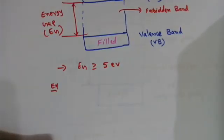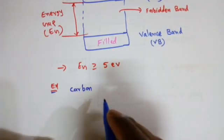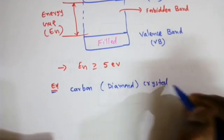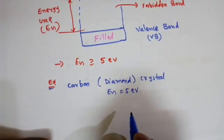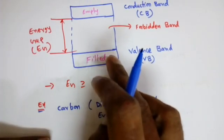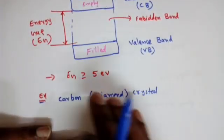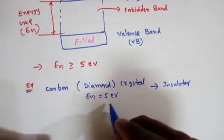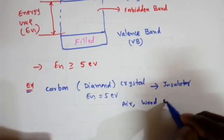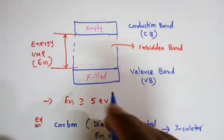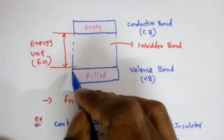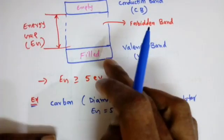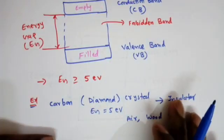For example, carbon in diamond crystal form — even though carbon is a fourth-group element — has an energy gap of approximately 5 electron volts. The electrons in the valence band are not able to move to the conduction band, so there is no conductivity in diamond crystal. Other examples of insulators include air and wood. This completes the energy band structure of an insulator — because the energy gap is very high, even if you apply some electric field or energy, the electrons cannot move to the conduction band.